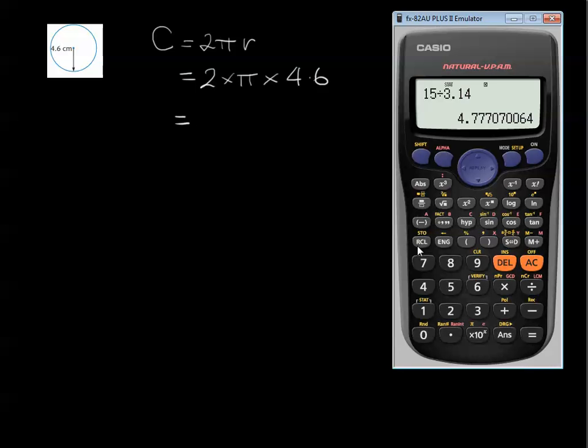We would do that by saying circumference is equal to 2πr and then we would just go through with those steps: 2 times π times 4.6 equals. And then we would have a look at our calculator and we would go 2 times π times 4.6.